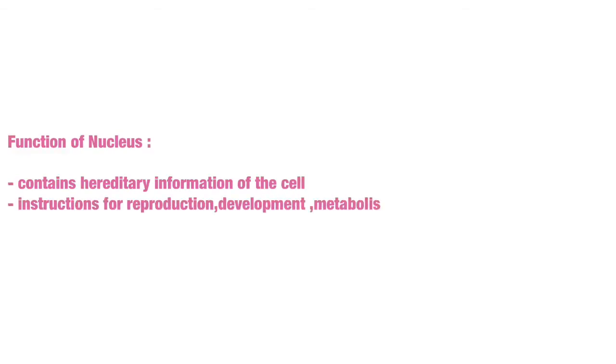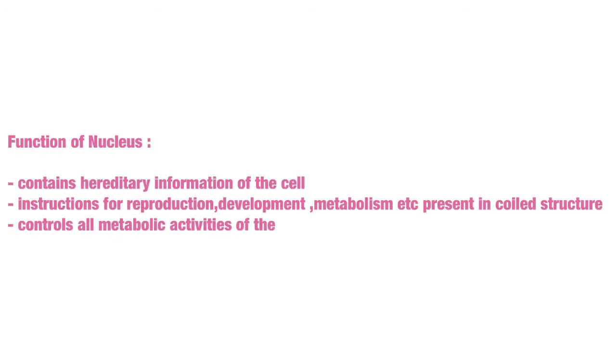The nucleus contains the hereditary information of the cell. All instructions for reproduction, development, metabolism, and behavior are present in a coiled structure called the chromosomes of the nucleus. It also controls all cellular activities. This concludes the chapter 'Cell: The Unit of Life' — kindly go through it properly. I hope you understood the concept. Thank you.